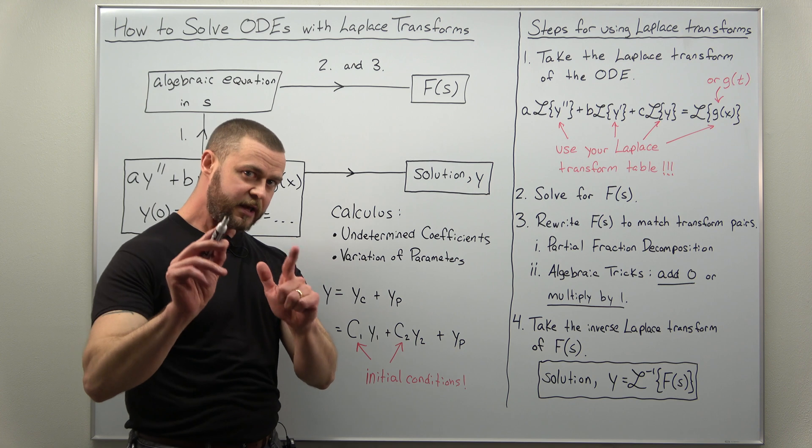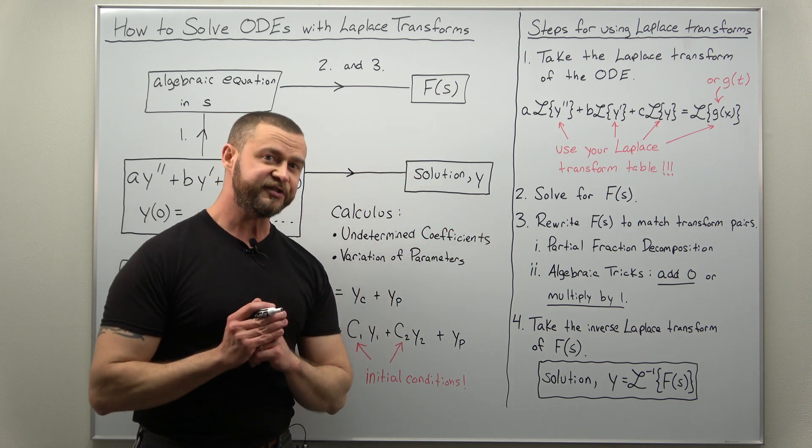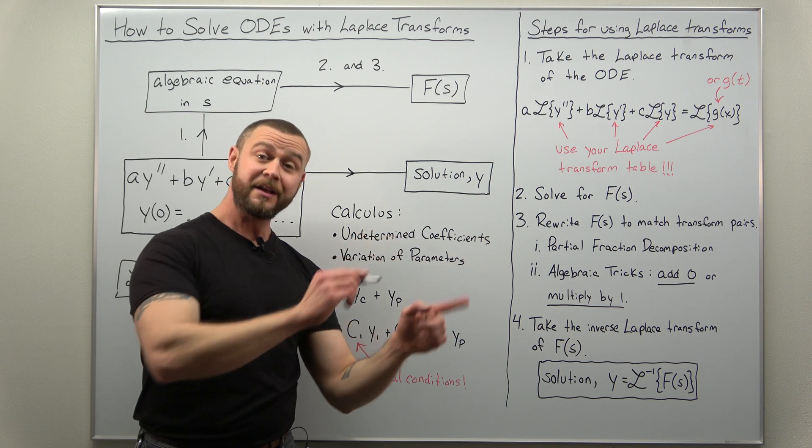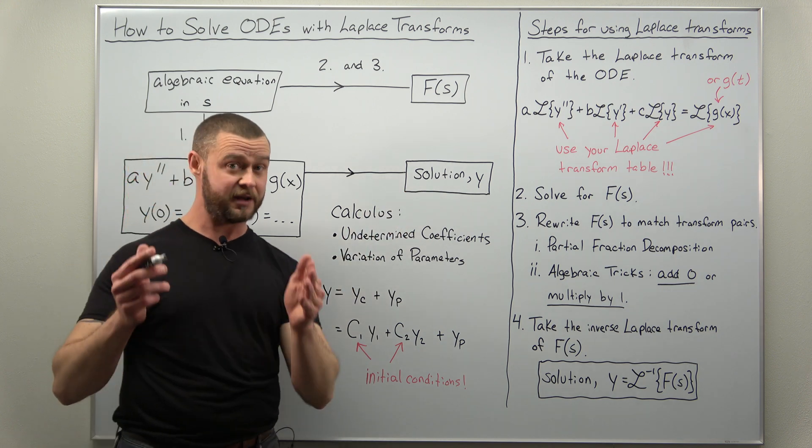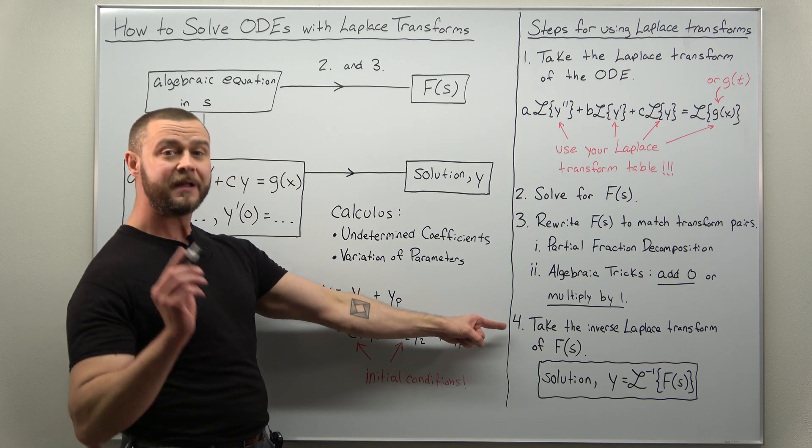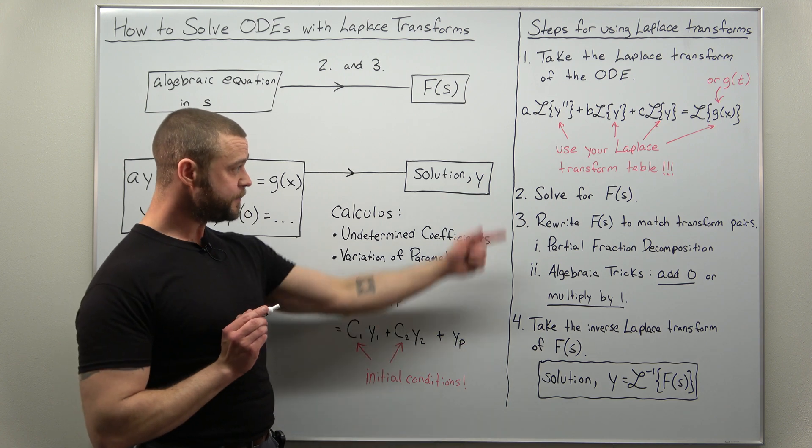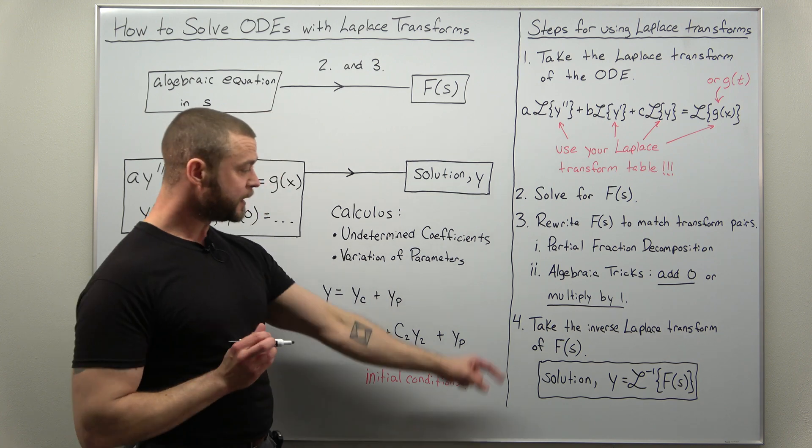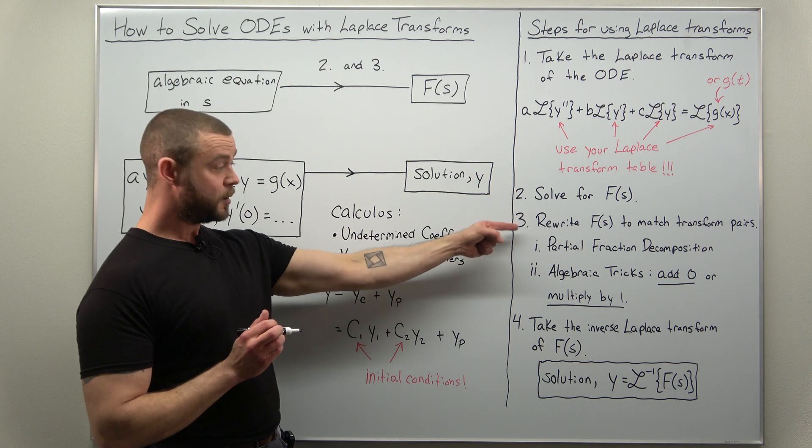Now what you want to keep in mind is you have the time or x domain and you have the frequency domain. So capital F of s, that's your solution in the frequency domain. Now we need to transform that back to our solution in x or the time domain, and that's where the last step, taking the inverse Laplace transform, comes in. Now ideally all the work from steps two and three, you've rewritten it so that way you can look up those transformations. So step four should be very straightforward if you put time in, particularly with step three.